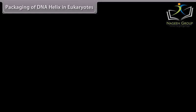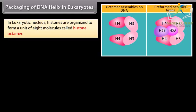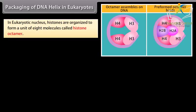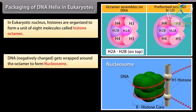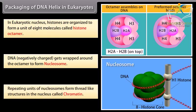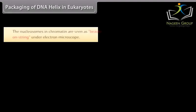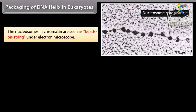Packaging of DNA helix in eukaryotes. In the eukaryotic nucleus, histones are organized to form a unit of 8 molecules called a histone octamer. DNA, which is negatively charged, gets wrapped around the octamer to form a nucleosome. Repeating units of nucleosomes form thread-like structures in the nucleus called chromatin.